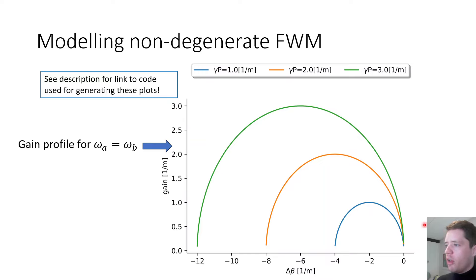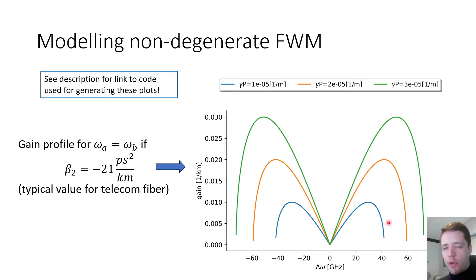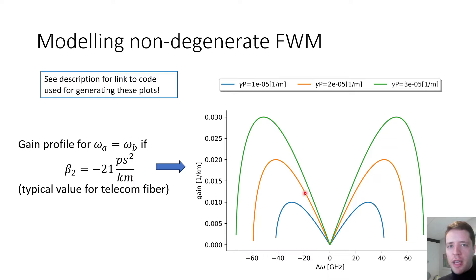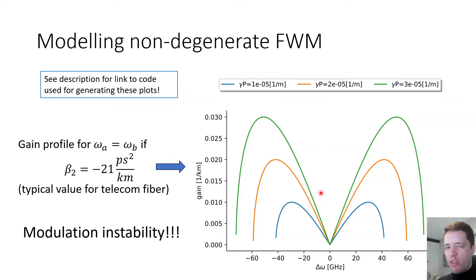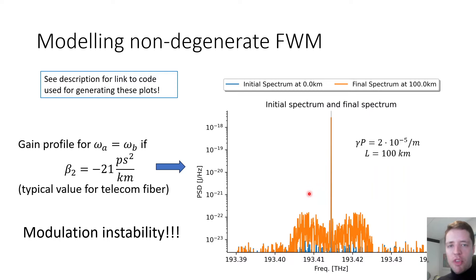In the special case where omega_A equals omega_B — a single CW pump — the analysis with three frequency components produces semicircular gain profiles all matched at zero. Graphing as a function of delta-omega with typical telecom fiber parameters near 1550 nm (negative beta_2), characteristic side lobes appear at specific frequency offsets from the pump. A simulation confirms these sidebands grow in intensity as the field propagates forward — this is modulation instability.